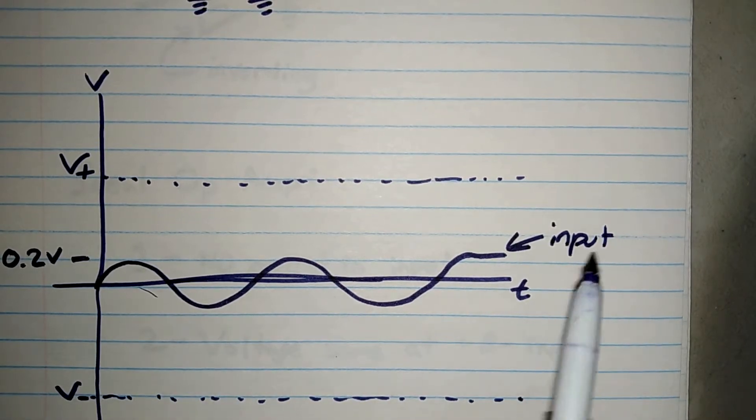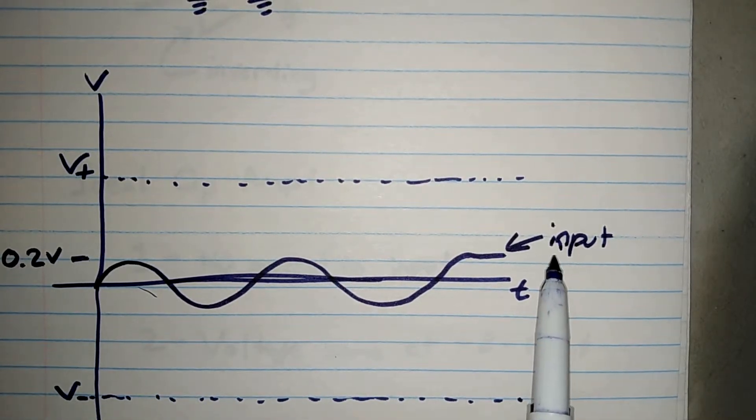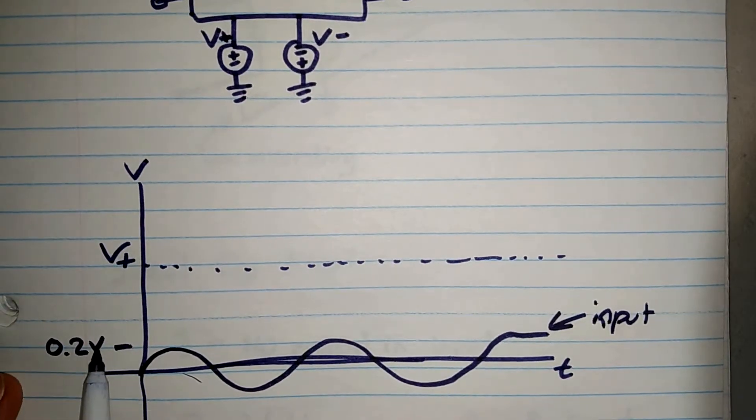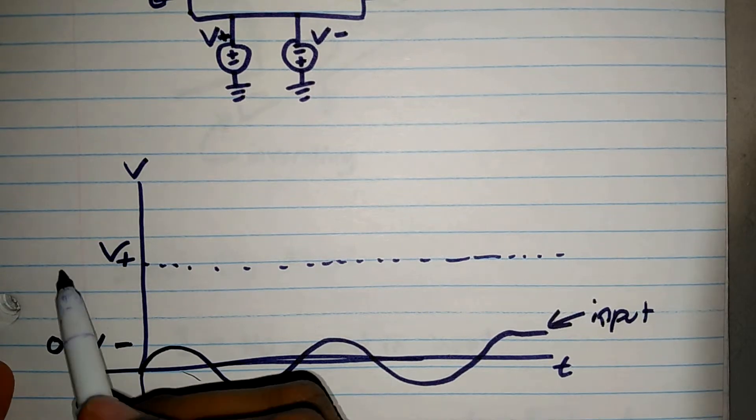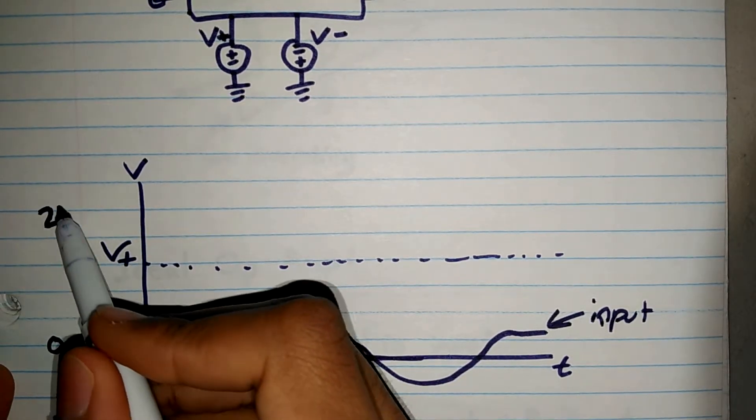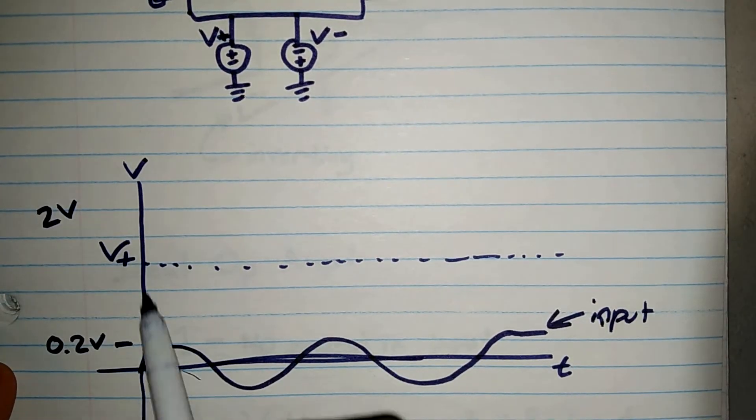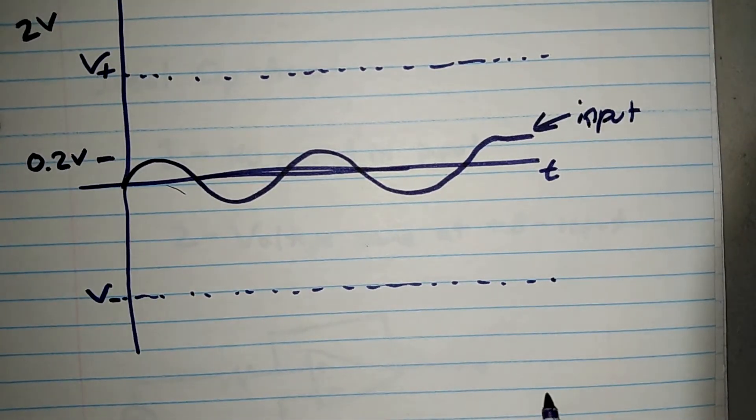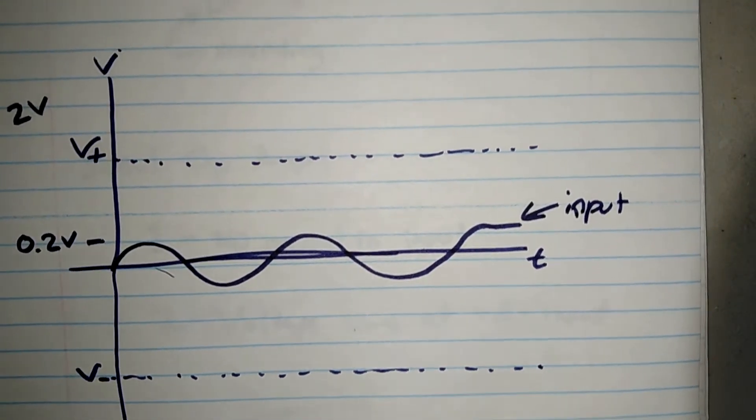When I amplify this, let me assume that the amplifier will amplify by ten times. So if I amplify this 0.2 V by ten times, I'm going to have 2 V, and 2 V will be something along this line and then go minus 2 V over here. So how will the amplifier produce the output?